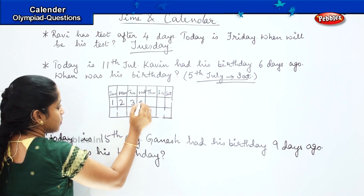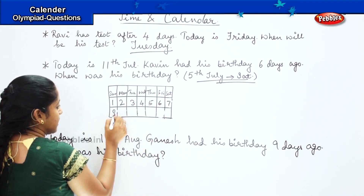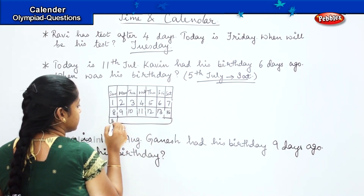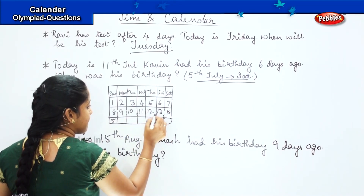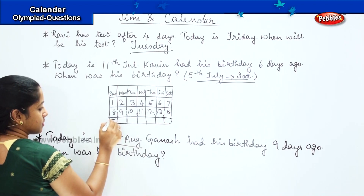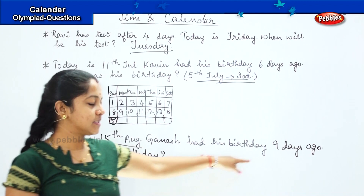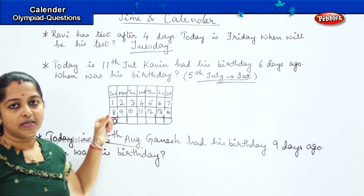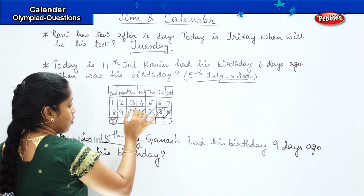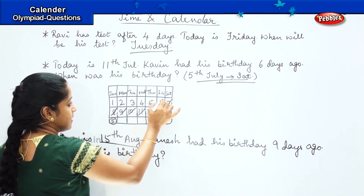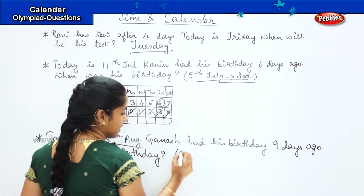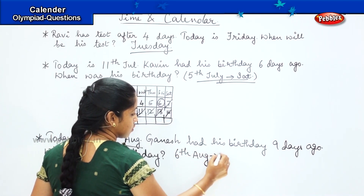Starting from Sunday: 1, 2, 3, 4, 5, 6, 7, 8, 9, 10, 11, 12, 13, 14 and 15. Today is 15th August — circling that. Ganesh had his birthday nine days ago, so we do backward counting: 1, 2, 3, 4, 5, 6, 7, 8 and 9. The ninth day back was on 6th of August. So Ganesh's birthday was on 6th August, which was on Friday.